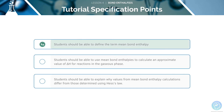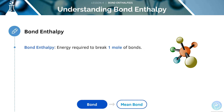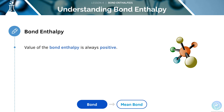The first objective is to define the term mean bond enthalpy. We will be covering two definitions: the term bond enthalpy, and the term mean bond enthalpy. The bond enthalpy is the energy required to break one mole of bonds. As energy is required to break bonds, the value of bond enthalpy is always positive.